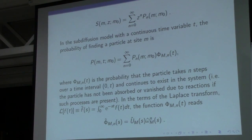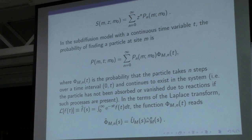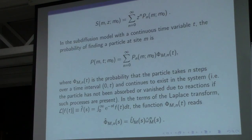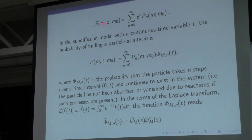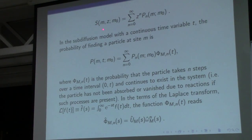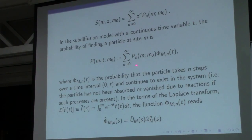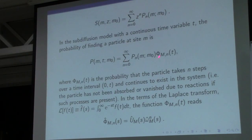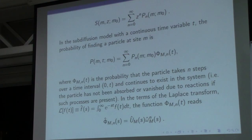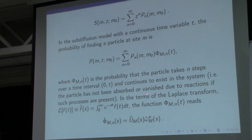This transition will be performed in two steps. In the first step, we pass from discrete to continuous time using the generating function, which is defined as follows. In the sub-diffusion or normal diffusion model, to find the probability for continuous time, we use the following formula. The function φₙ is the probability that the particle takes exactly n steps in this time interval and continues to exist in the system.